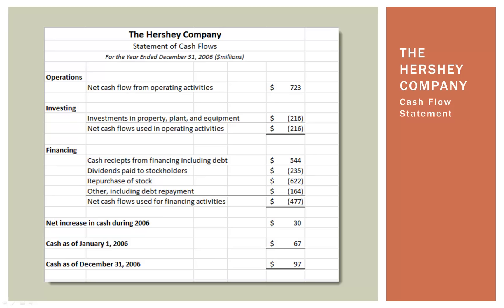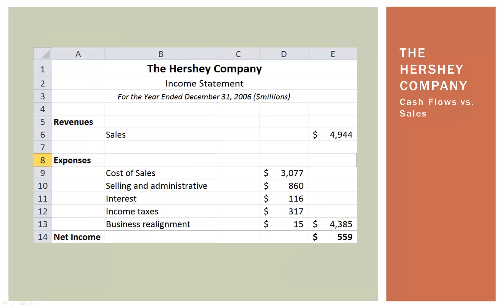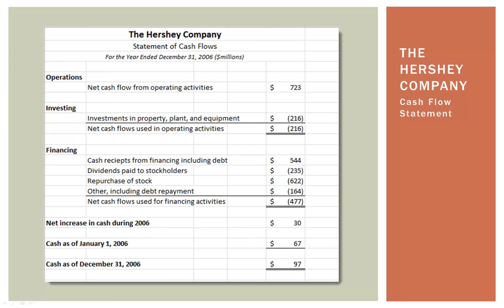Cash is different from net income, and I want to show you that right now. Hershey had $723 million in positive cash flow from operations, with some outflows in investing and financing. Their net increase was $30 million added to $67 million, ending with $97 million cash. Now looking at their net income statement: they had $4.9 billion in sales, and once everything was accounted for, they had a net income of $559 million. Their net cash flow from operations alone — $723 million — was more than their net income. So you have to differentiate between cash flow and net income and profit. They're not the same thing.